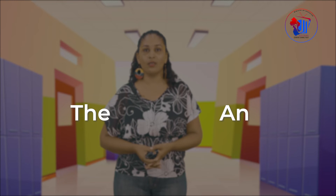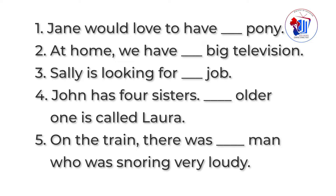Great guys! Ahora que entienden bien los artículos en inglés, les toca completar la siguiente actividad usando the, an, a, or some. Hagamos juntos el número uno: "Jane would love to have ___ pony." Acá tienes que escoger A o AN. Recuerden, nos debemos fijar en la primera letra de la palabra. En este caso, pony comienza con una consonante, por lo tanto utilizamos el artículo indefinido A. La oración se leería: Jane would love to have a pony.